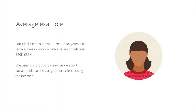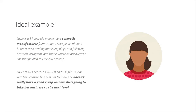Here are some examples of customer avatars. An average example — what most people would do — focuses mainly on demographic info. For example: our ideal client is between 28 and 45 years old, female, lives in London, with a salary between 20 and 35K per year. She uses our product to learn more about social media so she can get more clients using the internet. That's an okay example, but that's what most people do. If you really want a detailed profile, you'd have a lot more detail than that.